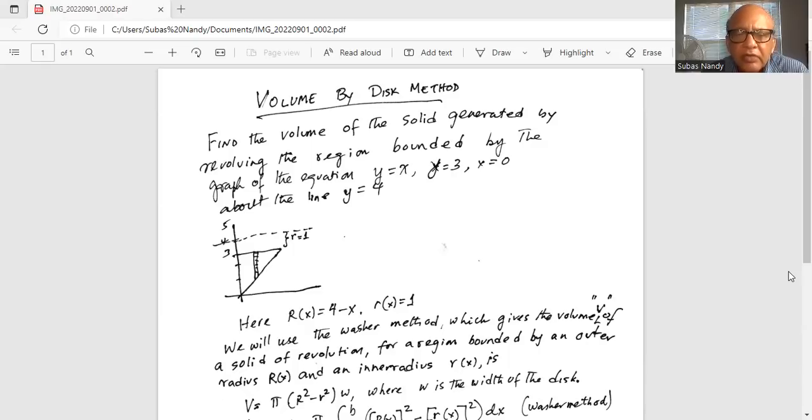Here R of x is 4 minus x because we are rotating about the line y equal to 4, capital R(x). And small r(x) is 1.